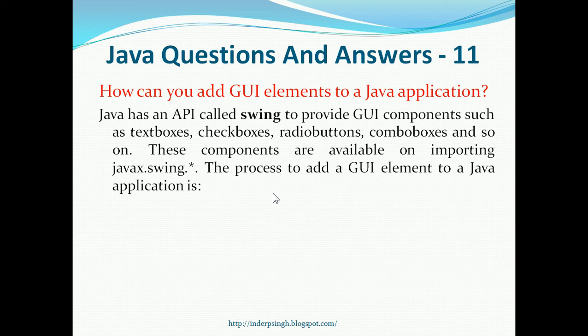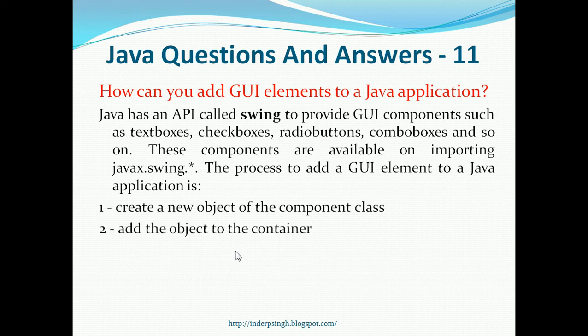The process to add a GUI element to a Java application is: 1. Create a new object of the component class. 2. Add the object to the container. And 3. Attach an event handler to the object.